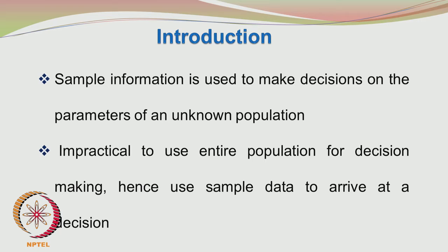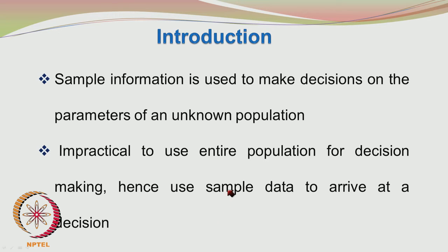Even though we are using sample information, we are always querying about the population parameters. The sample information is used to make decisions on the parameters of an unknown population. We do not know mu and sigma squared, so we use sample information as point estimates of the population parameters. It is impractical to use the entire population for decision making, so we resort to sampling, and usually only one sample is taken from a given population.